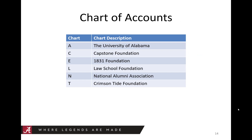Let's review the charts of accounts available for reporting in Axiom: Chart A — University of Alabama, Chart C — Capstone Foundation, Chart E — 1831 Foundation, Chart L — Law School Foundation, Chart N — National Alumni Association, and Chart T — Crimson Tide Foundation. It is important to note that all Axiom data elements must be unique; therefore, the chart is appended to the front of each FOAP element. For example, Fund 11,000 for Chart A is A11000, and Organization Code 204101 for Chart C is C204101. When searching or filtering data, it helps to use the chart as a prefix.